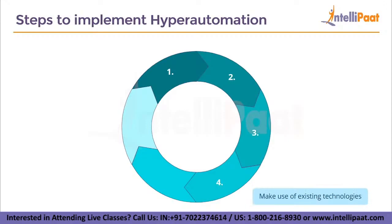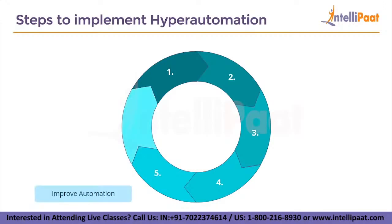The fourth step is to make use of existing technologies. Discover already existing technologies like RPA, OCR (optical character recognition), and NLP (natural language processing), which are available in the form of algorithms or services, and find out where they fit into your hyperautomation stack.